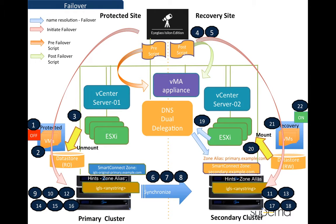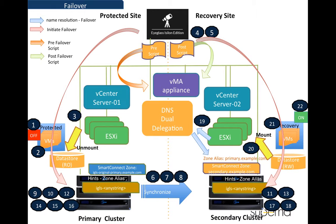The next diagram is for the failover process. We will only highlight some of the numbered processes here. For more details, you can refer to EyeGlass online documentation. Process numbers 1, 2, and 3 are the pre-failover steps. They are executed as part of the EyeGlass pre-failover script through the VMA. These steps are shutting down the protected VM, removing the VM from inventory, and unmounting the NFS datastore.